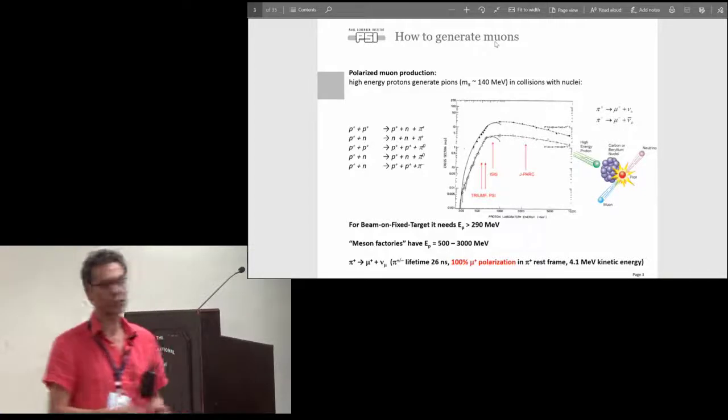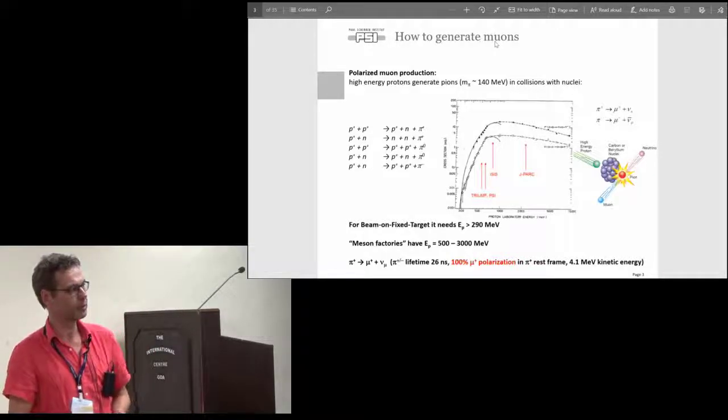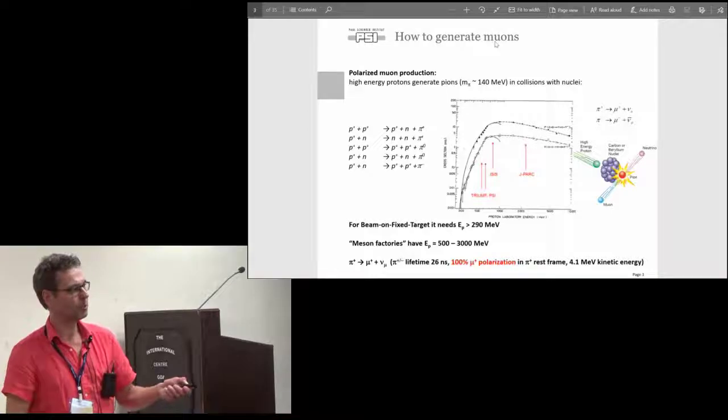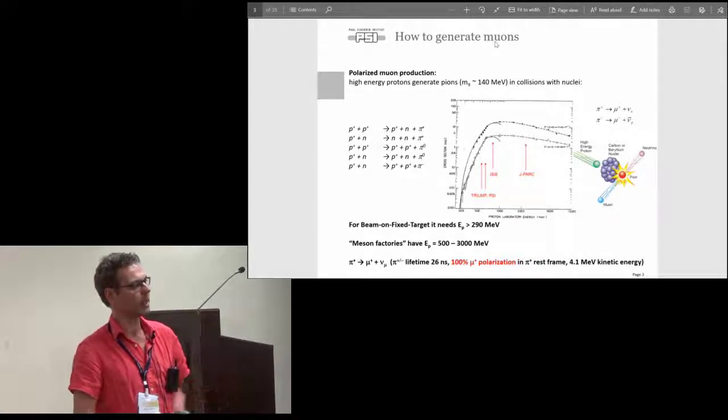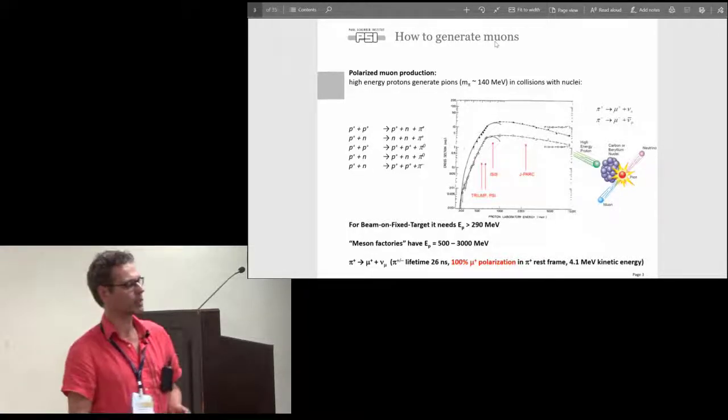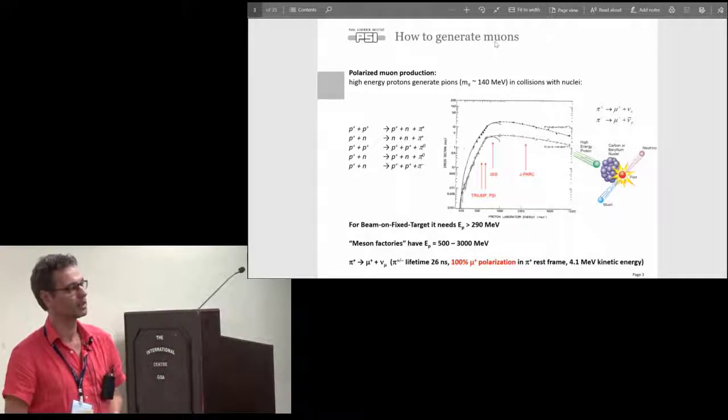I will not talk about the advantages and disadvantages of using DC or pulsed beams. The cyclotrons are typically 50 megahertz machines which is in the range of the lifetime of the pion, so the time structure of the muon beam of the accelerator will be smeared out usually at these machines.